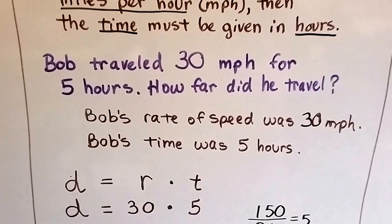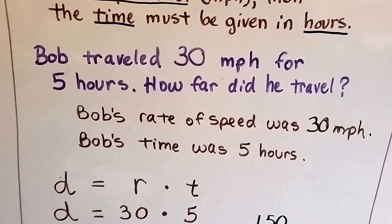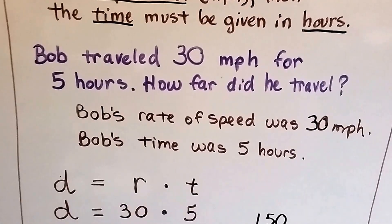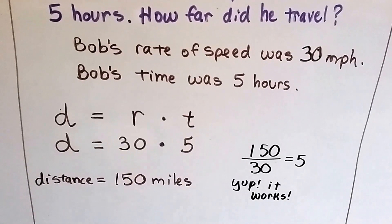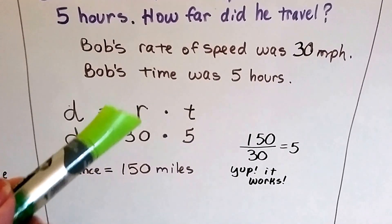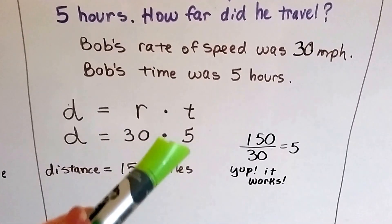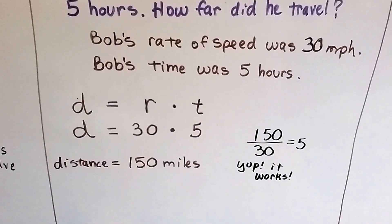So Bob traveled 30 miles per hour for five hours. How far did he travel? Well, Bob's rate of speed was 30 miles an hour. Bob's time was five hours. We plug that into our formula, D equals R times T. His rate is 30, his time is 5. So 30 times 5 is 150. His distance was 150 miles.